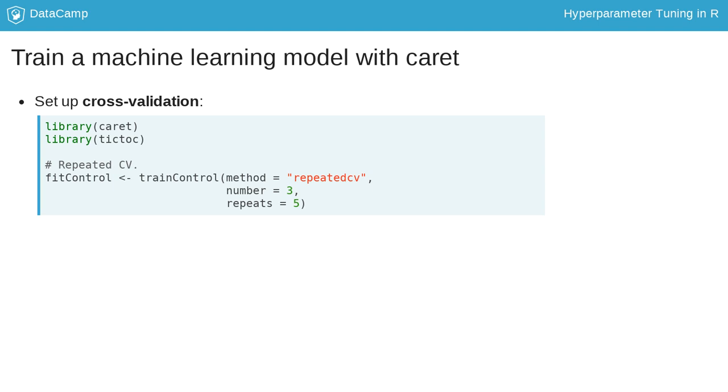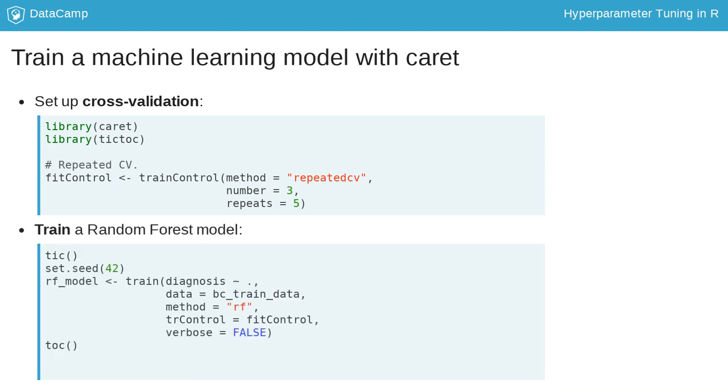This scheme is then given as an argument in the train function. In caret, we can train machine learning models with a large number of different algorithms. We define this with the argument method in the train function. Here, we will train a random forest model, which is abbreviated RF.